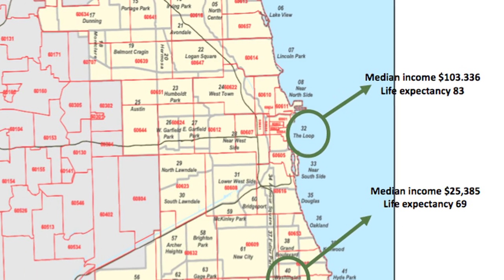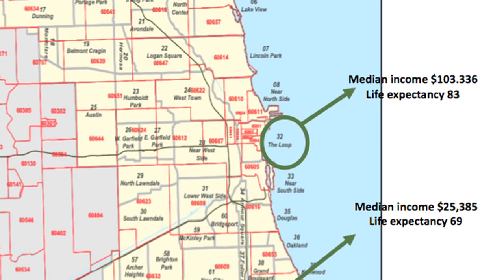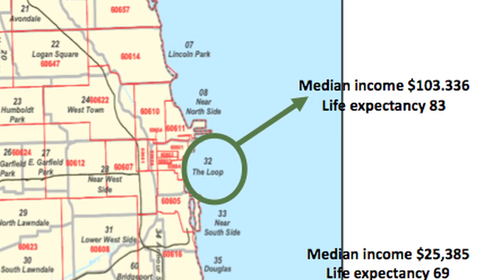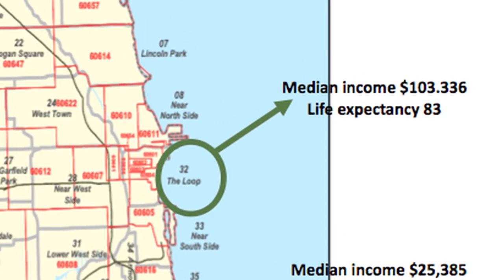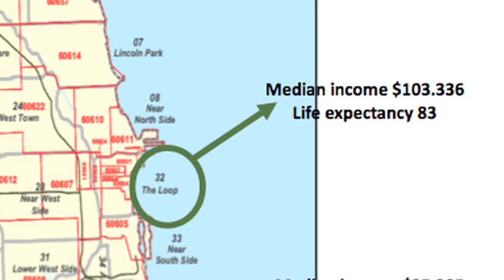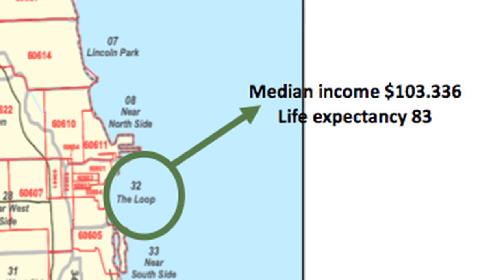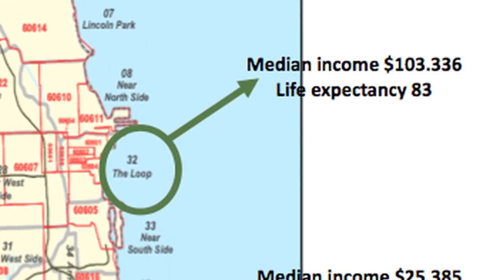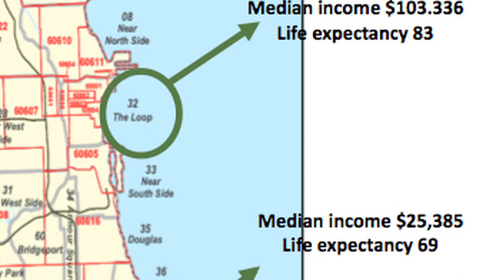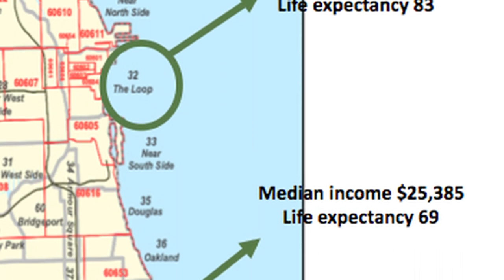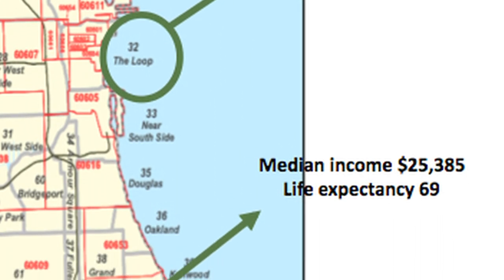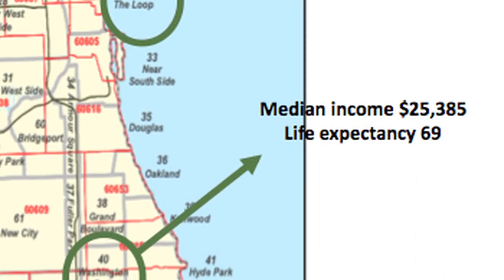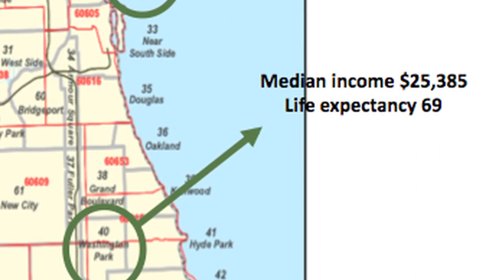In Chicago, in a neighborhood called the Loop with a median income of $103,000 a year, the life expectancy is 83 years. While three blocks south of this neighborhood in Washington Park, where the median income is $25,000 a year, the life expectancy is 69 years.